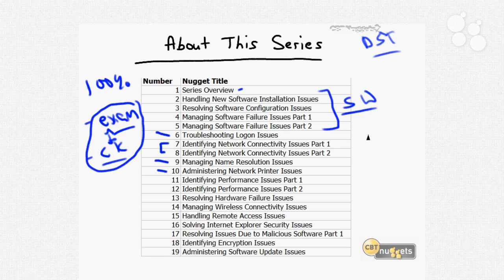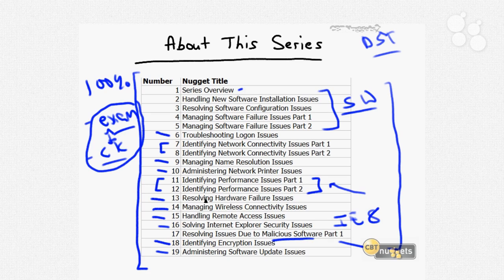We'll look at DNS and how name resolution factors in with users' network problems, network printing. This is all daily practice for a Microsoft desktop support technician. We're going to deal with troubleshooting performance, resolving hardware failures, wireless connectivity, remote access, Internet Explorer 8, resolving issues due to malicious software, encryption issues, and then finally, software update. As a whole, this skill set is really nicely put together by Microsoft. They're experts at desktop support because they wind up supporting their software every business day.